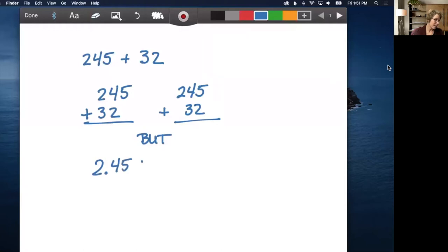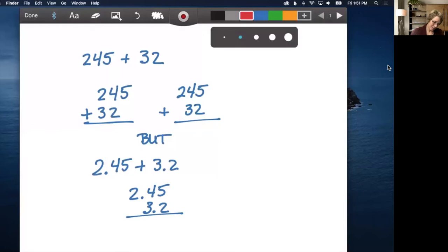Because now when I try to line them up to the right, clearly we're going to have problems. So instead of saying line it up to the right, what's more appropriate to say is to line up like values.